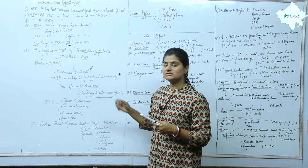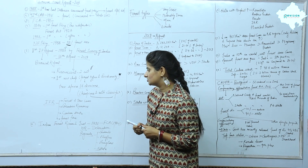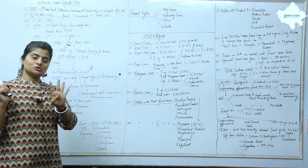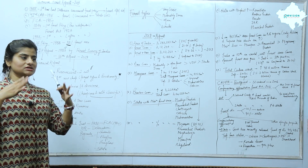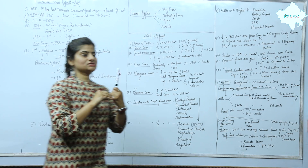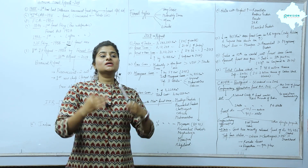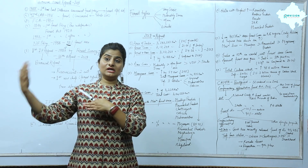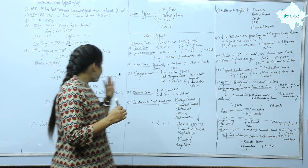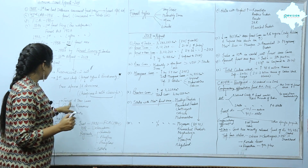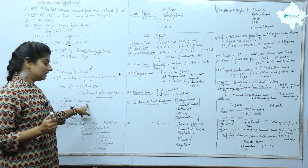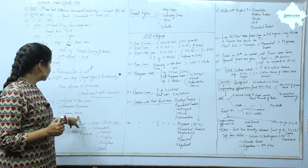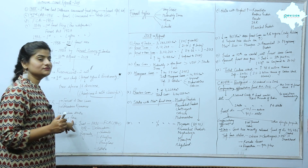The Indian Forest Report covers 4 main things: first, forest and tree cover; second, bamboo resources; third, carbon stocks; and fourth, forest fires.